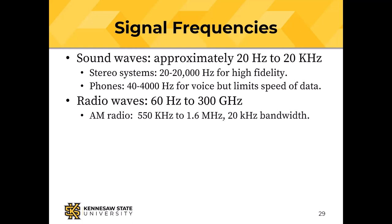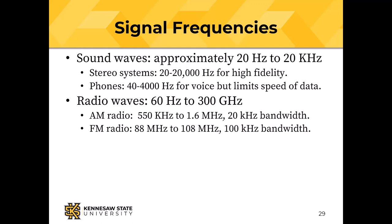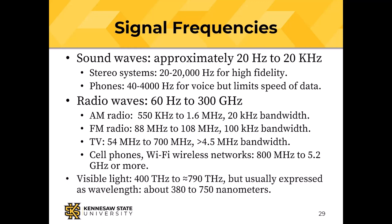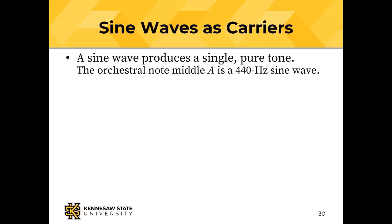AM radio goes up to about 1.6 MHz, with each station allotted 20,000 Hz of bandwidth. FM radio has 100,000 Hz of bandwidth, from 88 MHz to 108 MHz. Television runs 54 to 700 MHz with about 4.5 MHz per channel for sound, picture, and color. Cell phones use 800 MHz to 5.2 GHz and beyond for 5G. Visible light is in the terahertz range, usually expressed as wavelength: about 380 to 750 nanometers.